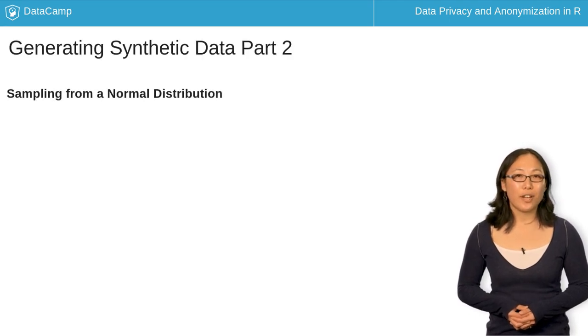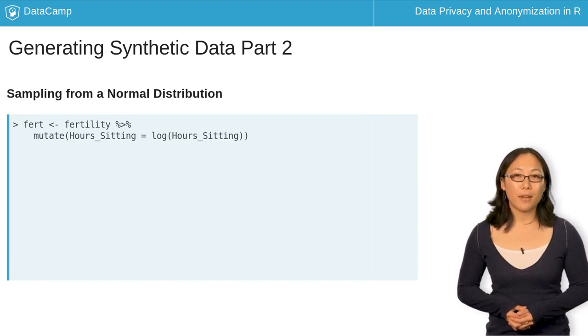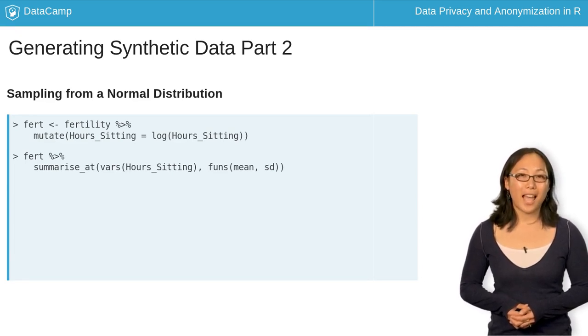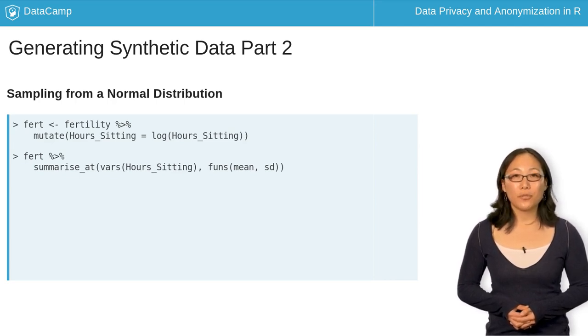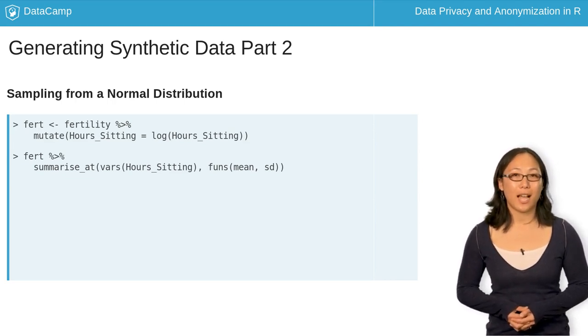After applying a log transformation on our sitting by using the mutate function, we will assign a new name for the data called vert. To sample from a normal distribution, you need to take the average and standard deviation of our sitting using summarizeAt. Since you are applying more than one function, make sure to use funs inside summarizeAt to apply both mean and SD at the same time.